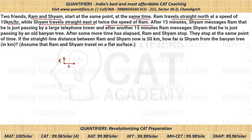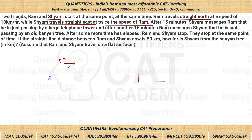Now, Ram will cover some distance and Sham will also cover some distance. We know Ram's speed. In 15 minutes — that is one fourth of an hour — Ram will cover 2.5 kilometers. Since Sham's speed is double, Sham will have traveled double the distance, so that will be 5 kilometers.